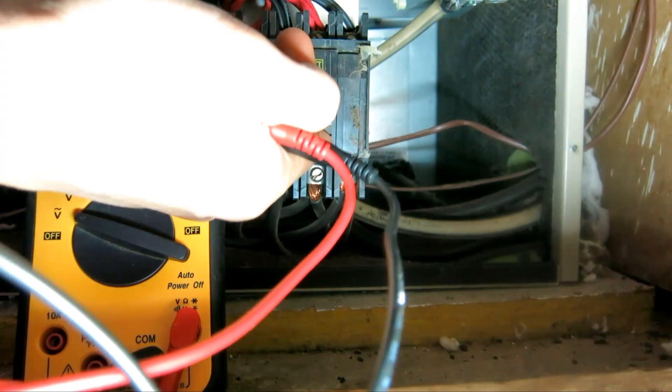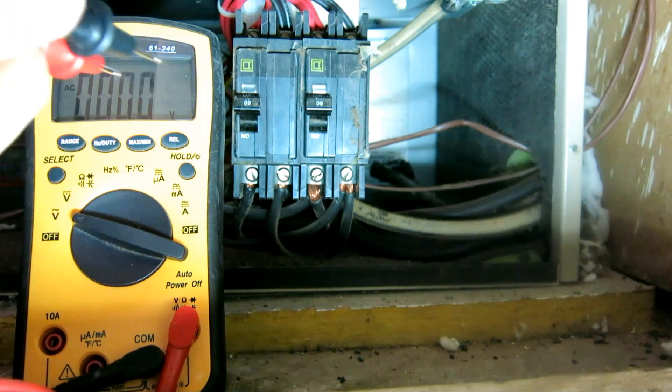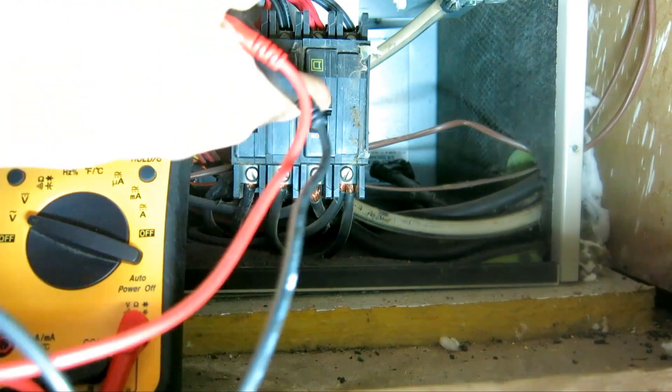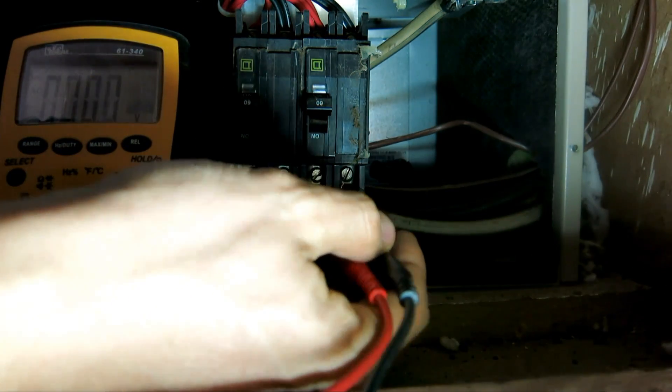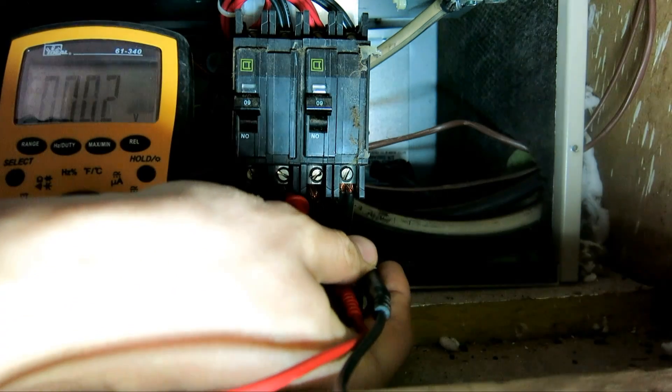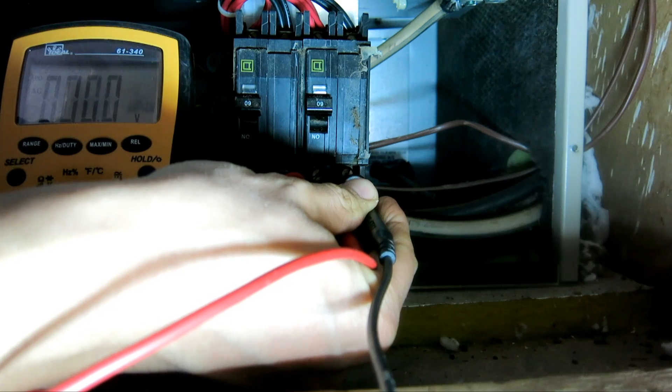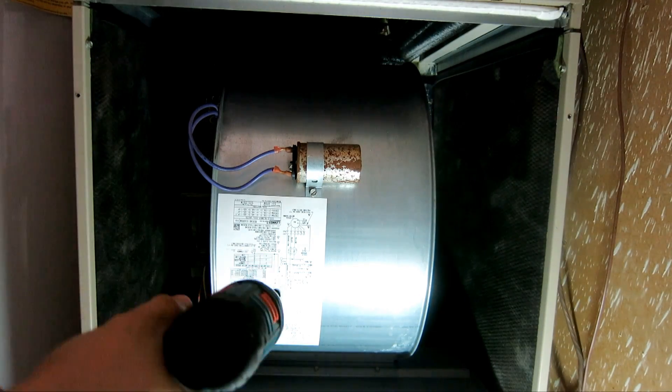First, let's check to make sure there's no more power going to this unit, even though I already switched off the breaker. I'll switch these two off and measure the leads on the bottom where the power comes in. As you can see, it's zero volts.